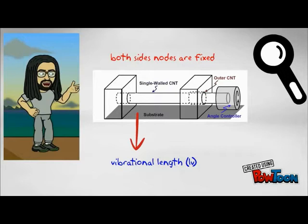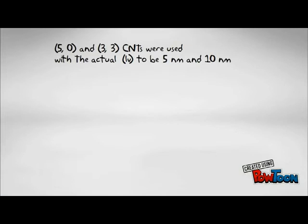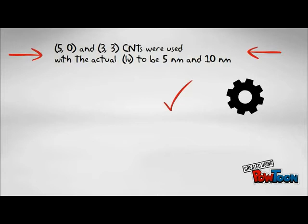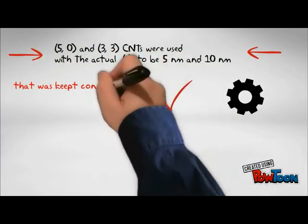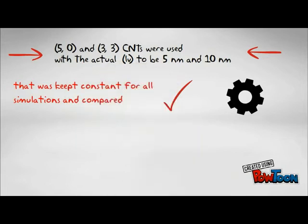The figure here shows the actual vibration length L lies between the two fixed nodes, and hence the length of the single-wall carbon nanotube. Two chiral single-wall carbon nanotubes, 5-0 and 3-3, were used with actual vibration lengths LV of 5 nanometers and 10 nanometers, set to be greater than the actual vibration lengths. The actual vibration length remained constant during all simulations performed in this work.